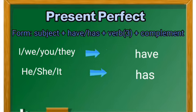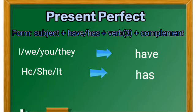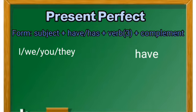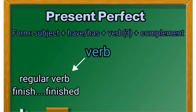الضمائر I, we, you, they تأخذ الفعل المساعد have. أما he, she, it فتأخذ الفعل المساعد has. وكما ذكرت لكم طلاب الأعزاء في الدروس الماضية، الفعل لدينا ينقسم إلى قسمين.